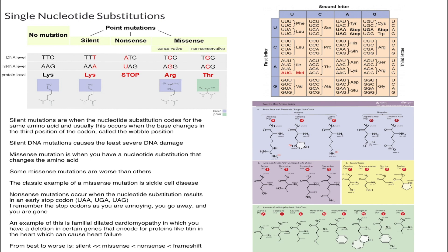Now let's talk about what happens when one of the nucleotides in a codon changes. We're going to talk about three different types of point mutations: silent mutations, nonsense mutations, and missense mutations. I'm going to use this table as an example for all of the different types of mutations.